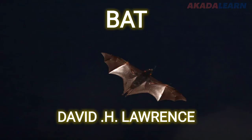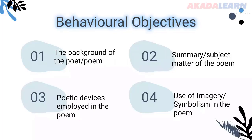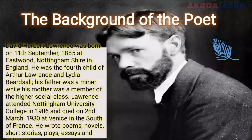Behavioral objectives: by the end of the lesson we should be understanding the background of the poet and the background of the poem, the subject matter or the summary of the poem, the poetic devices employed in the poem, as well as the use of imagery and symbolism in the poem.